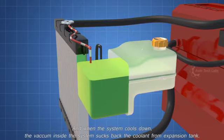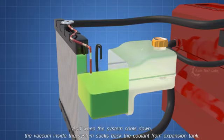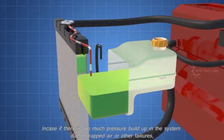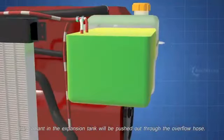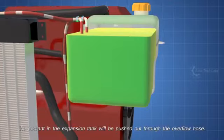And when the system cools down, the vacuum inside the system sucks back the coolant from expansion tank. In case if there is too much pressure build up in the system due to trapped air or other failures, the coolant in the expansion tank will be pushed out through the overflow hose.